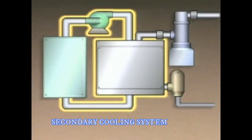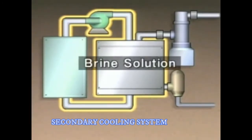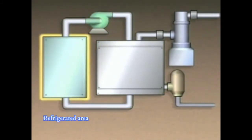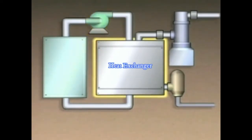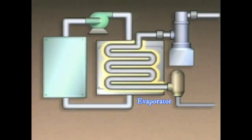In this example, the system uses a brine solution. The brine flows through the process equipment where it absorbs heat and cools the equipment. A pump is used to create flow through the brine cooling system, and the brine is then pumped to a heat exchanger, which serves as the evaporator in the refrigeration system.